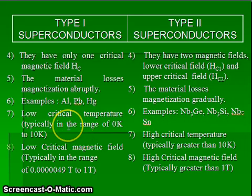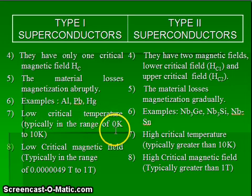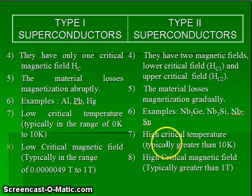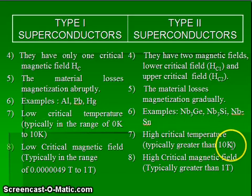In case of type 1 superconductors, they have a lower critical temperature, typically in the range of 0 Kelvin to 10 Kelvin. Type 2 superconductors have a high critical temperature, typically greater than 10 Kelvin.